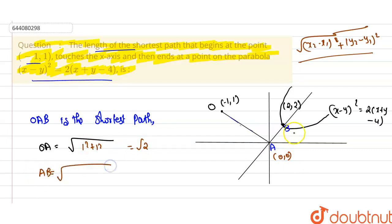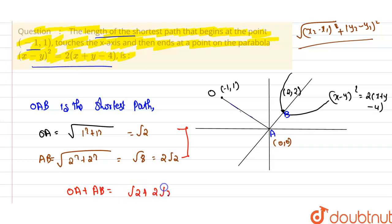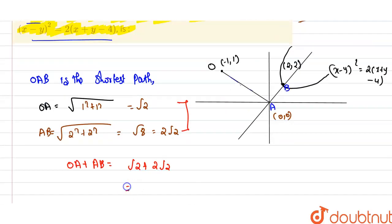Next, the AB distance from (0, 0) to (2, 2): √(2² + 2²) = √(4 + 4) = √8 = 2√2. Adding OA and AB: √2 + 2√2 = 3√2. So the shortest path length is 3√2.